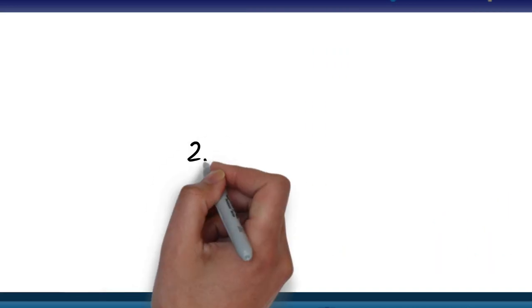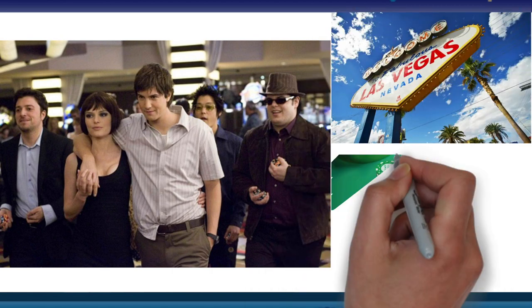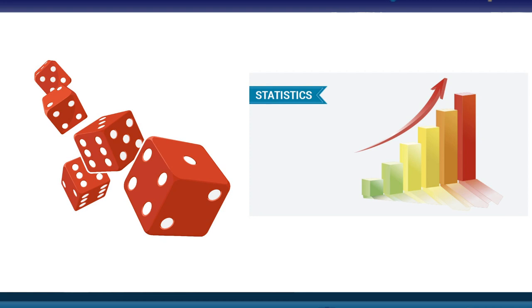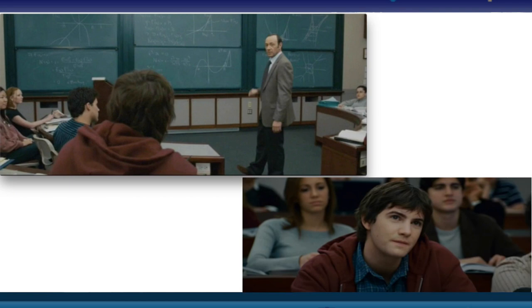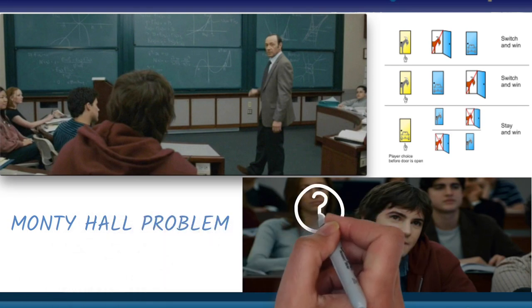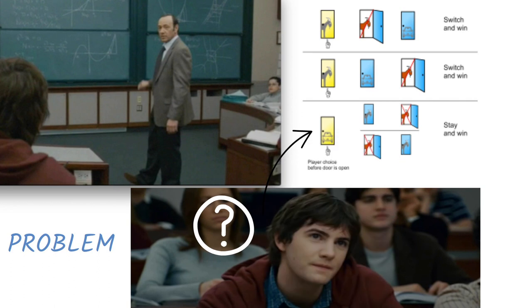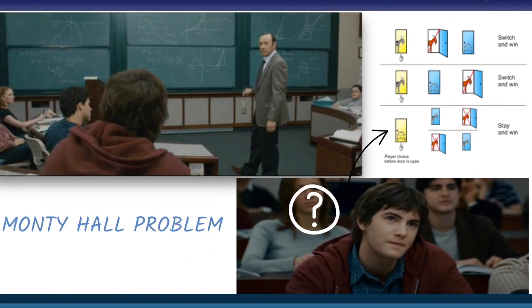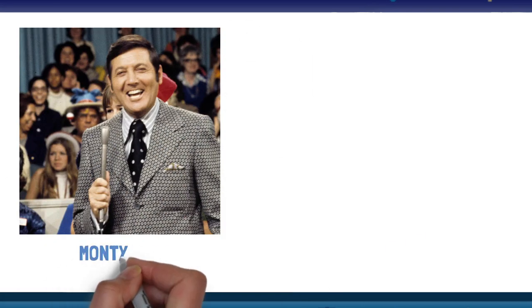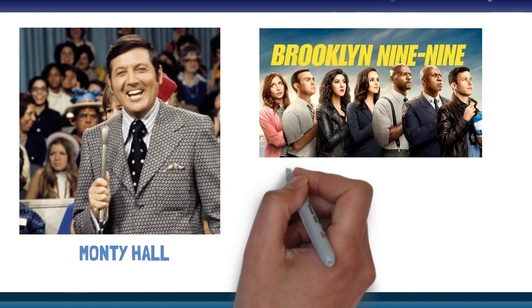The second movie is 21, where six MIT students plan to make millions by counting cards in Vegas casinos. The entire movie is laced with themes of probability and statistics. One scene stands out: MIT professor Mickey Rosa tests Ben's prodigal mind by posing the well-known Monty Hall problem. Ben explains the change in probability of winning the car behind one of three doors, accounted for by variable change. This problem, inspired by the game show hosted by Monty Hall, also appears in the crime comedy Brooklyn Nine-Nine.